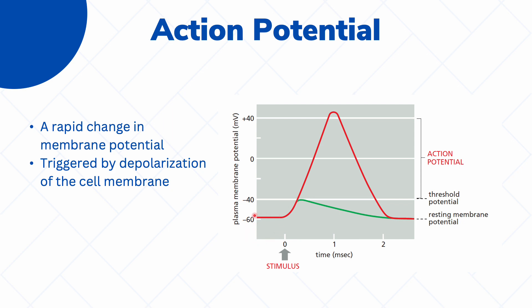At rest, our cell membrane has a very negative potential. But as it becomes stimulated, it starts to depolarize. At a certain point, which we call the threshold potential, this depolarization suddenly increases. This is because there is a sudden influx of sodium ions into the cell, so the membrane potential rapidly increases from negative and becomes positive.